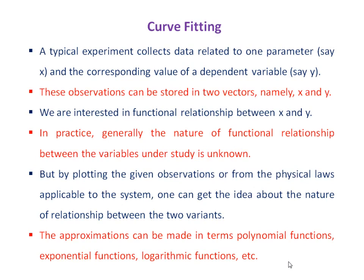As we know, a typical experiment collects data related to one parameter, say x, and the corresponding value of dependent variable, say y. These observations can be stored in two vectors, namely x and y. We are always interested in the functional relationship between x and y. In practice, the nature of this functional relationship is generally unknown, but by plotting the observations or from the physical laws applicable to the system, one can get an idea about the nature of relationship between the two variables.